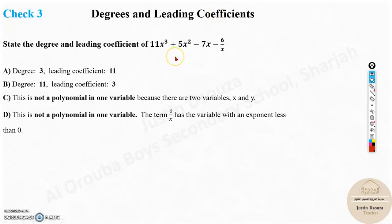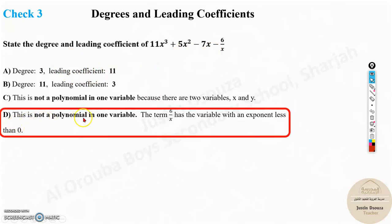The first instance, most of the students might think, okay, the degree is 3. Yes, the highest degree. And the leading coefficient is 11. But that is not the answer. The answer over here is D because it is not a polynomial in one variable.